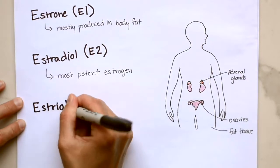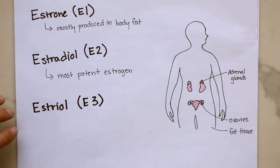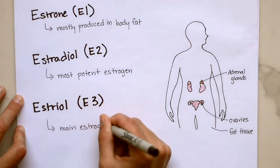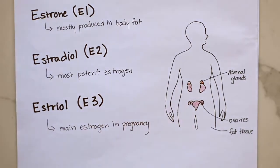And then lastly, we have estriol, E3. Now estradiol can be converted to estriol predominantly in the liver. Estriol is a weak estrogen. It is also the main estrogen of pregnancy and is secreted by the placenta.